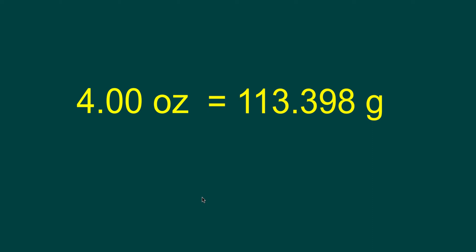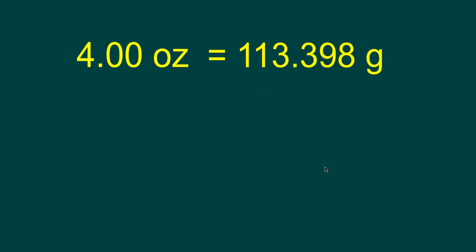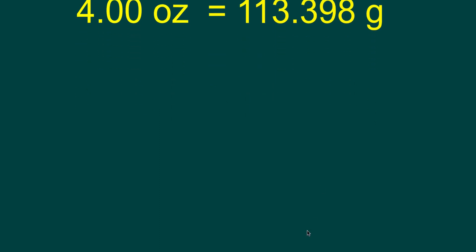Four ounces is equivalent to 113.398 grams. 4.00 is three significant digits. We have six digits in our answer, so we now need to round this to three significant digits, which would give us four ounces is equivalent to 113 grams.